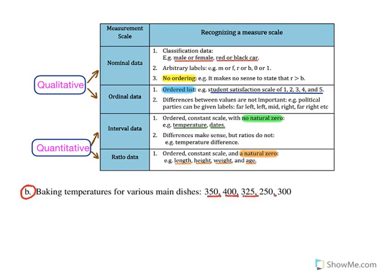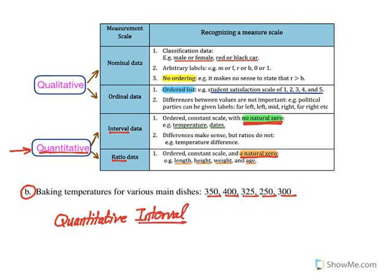The next example is baking temperatures for various main dishes. Since these are numbers, not qualities, you know immediately that this is quantitative. Now we need to determine whether it's interval or ratio. The difference is whether there is a natural zero. For temperature, because you have Celsius, Fahrenheit, and Kelvin, we don't agree on a natural zero — so this is quantitative interval. Similarly, dates are also quantitative interval.